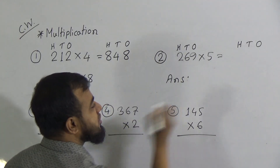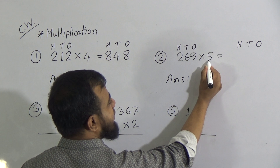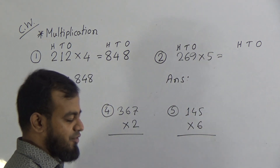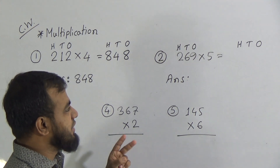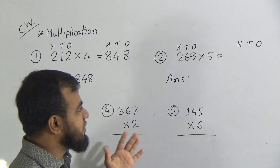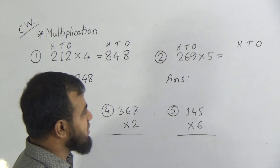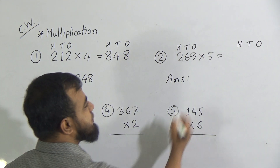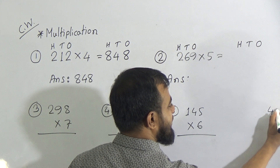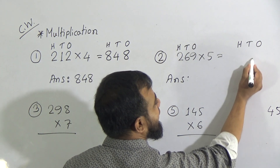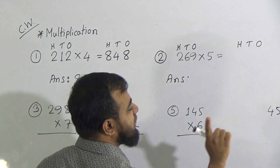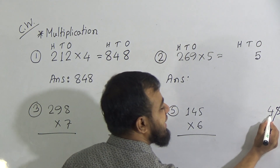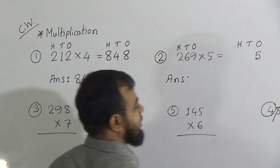Look at the multiplication steps carefully. We multiply 5 with the 1's place, 9. Using the times table of 5: 5 9's are 45. In the 1's place we can write only one digit, so we write the right-side digit, 5, in the 1's place. The 4 is carrying in our hand.